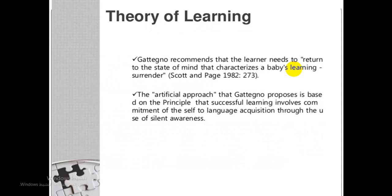What is the theory of learning according to the silent way method? Successful learning involves commitment of the self to language acquisition through the use of silent awareness and then active trial. Silent way learners acquire inner criteria, and the silent way student is expected to become independent, autonomous, and responsible for their learning.